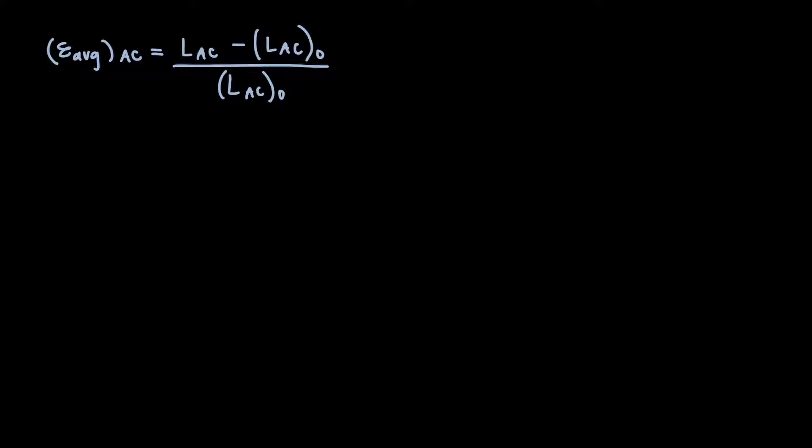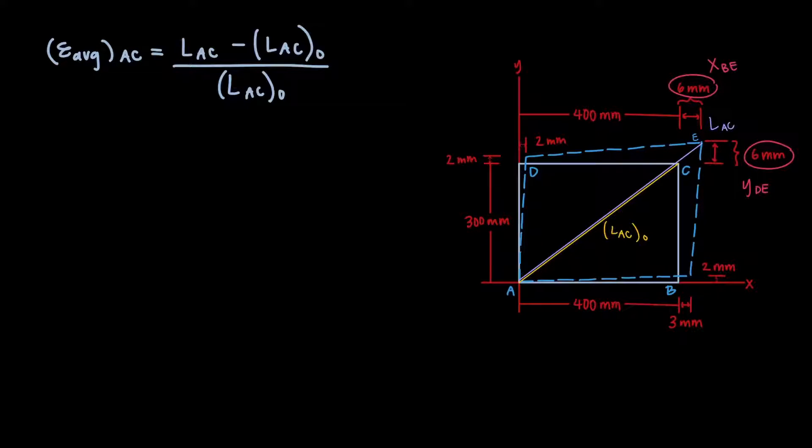Let's bring back the free-body diagram from the last slide. We've added a couple of things to it, and we can go over each part step by step. Check out the yellow diagonal on the free-body diagram. That runs across point A to point C, and that'll be our original length. Instead of calling it L_AC₀, we'll just call that L₀ for short.